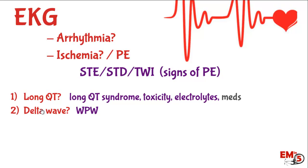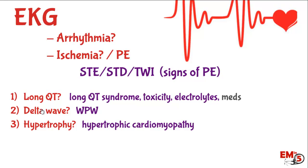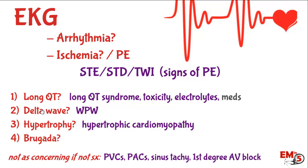Number two: is there a delta wave? This would be indicative of WPW, which can cause arrhythmias that make you syncopize, and patients can go in and out of those arrhythmias. Number three: is there hypertrophy? You're looking for inappropriate hypertrophy — a young patient with no hypertension or cardiac history who has large voltage concerning for hypertrophy should raise concern for hypertrophic cardiomyopathy. Number four: look for the Brugada wave pattern, which you need to start recognizing on every EKG in syncope.